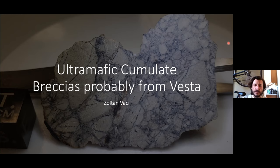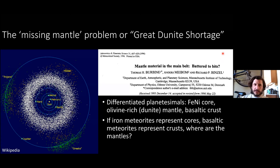They're olivine-rich rocks — there's a dunite and two lherzolites. That suggests they relate to the missing mantle problem, or the 'great dunite shortage' as it's been called in the literature. This is basically the paucity of olivine-rich material both in asteroids viewed through remote sensing and in the meteorite record.